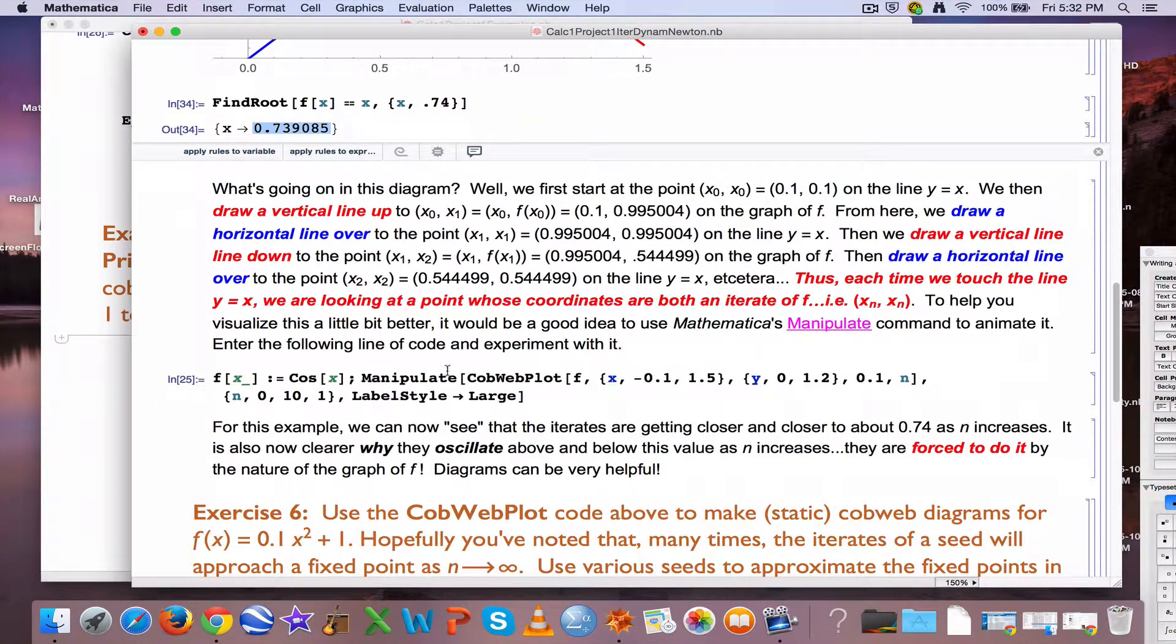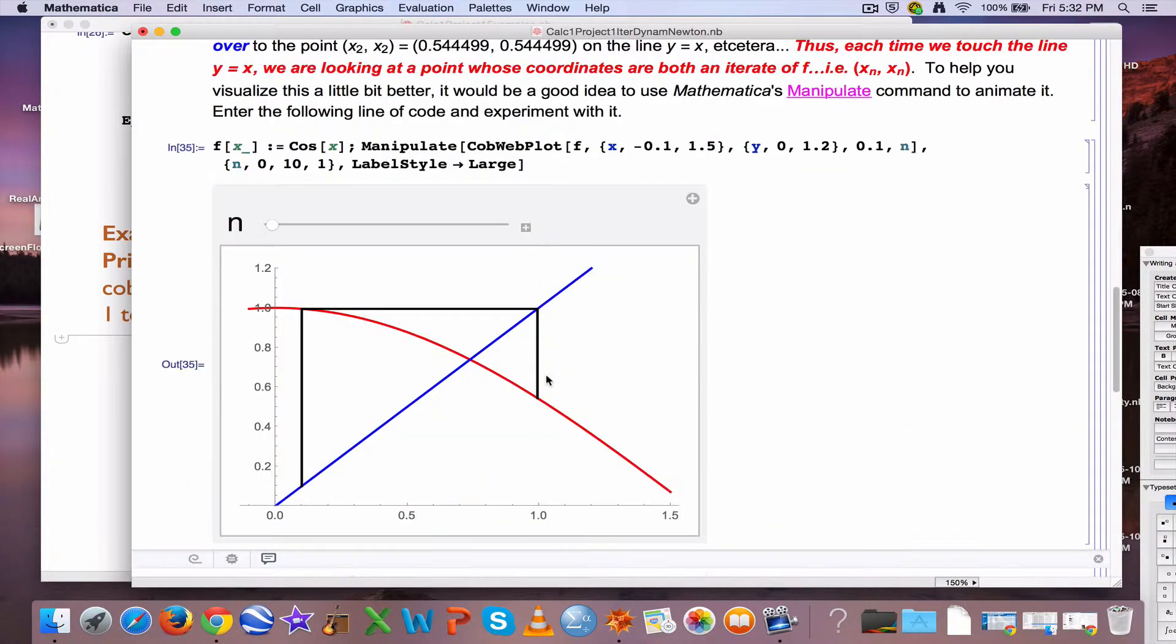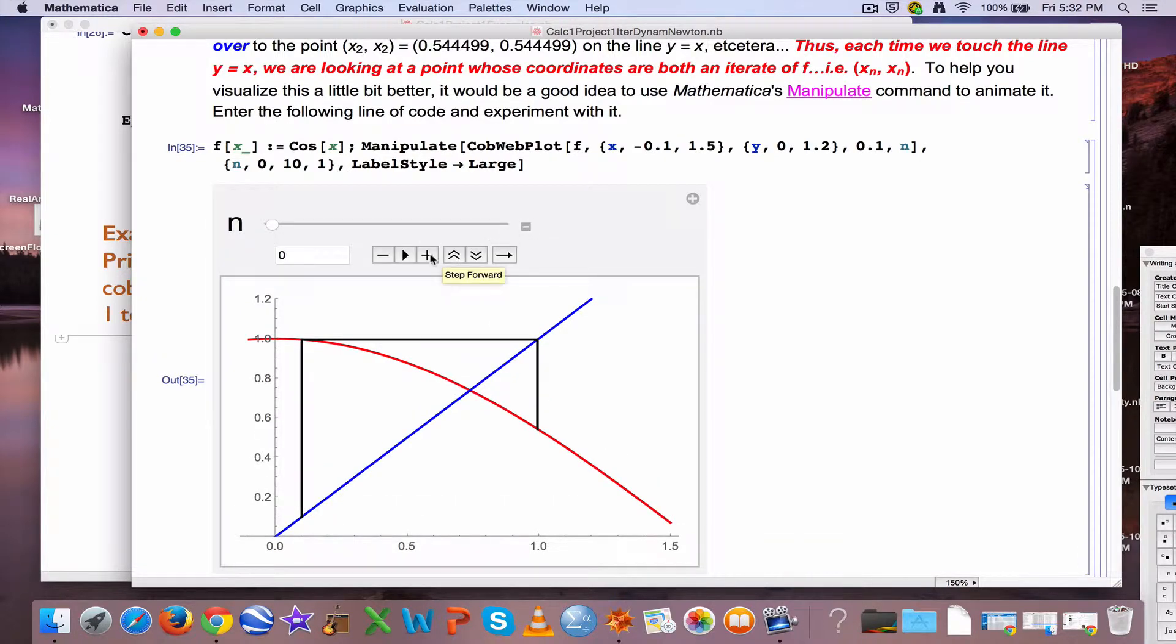We can also animate this. Manipulate is Mathematica's basic way to animate something. If I put this cobweb plot code inside a manipulate with the number of iterations as an animation parameter, and I'm going to let n increase from 0 up to 10 in increments of 1, then we're going to see this iteration process more dynamically. Instead of a static diagram, we can create a dynamic diagram. We can increase n by 1 each time and see how the iterates head toward that fixed point there. So that's kind of neat.